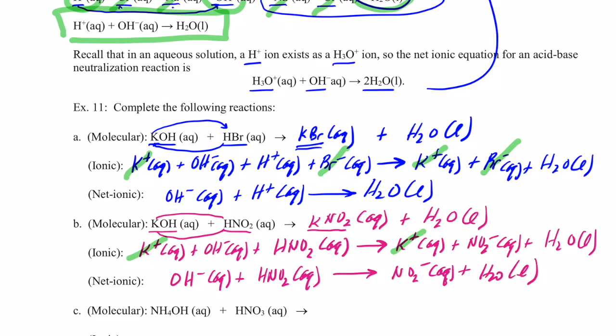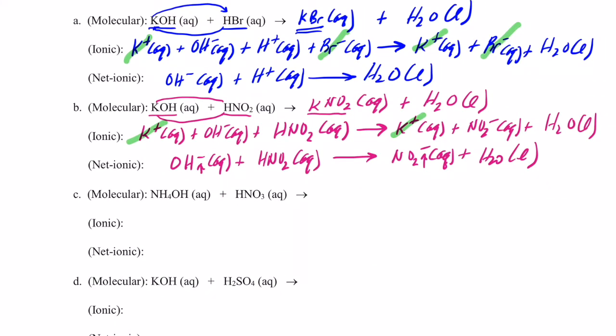You can check that this balances — the atoms must balance (nitrogens, hydrogens, and oxygens) and the charge must also balance. On the left-hand side I have a one negative charge and on the right-hand side I also have a one negative charge, so the charge balances as well.